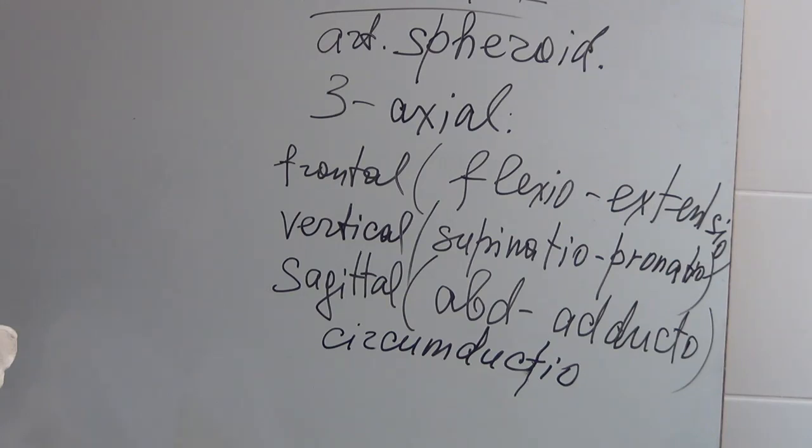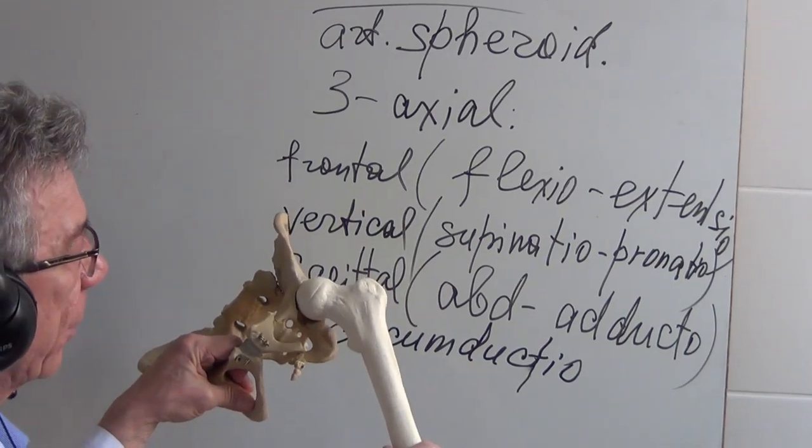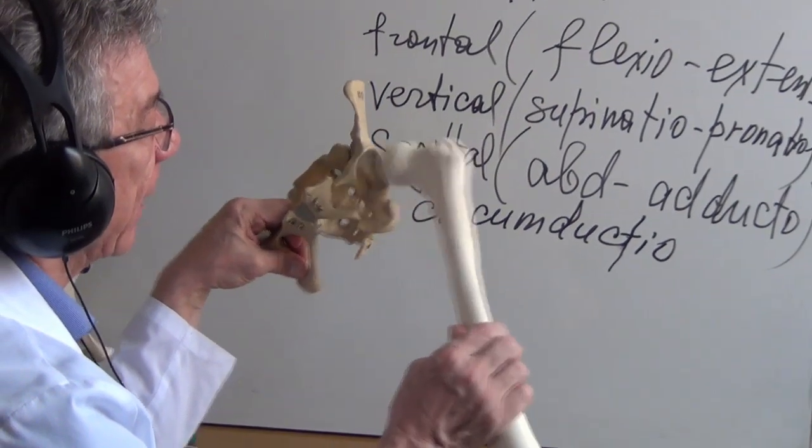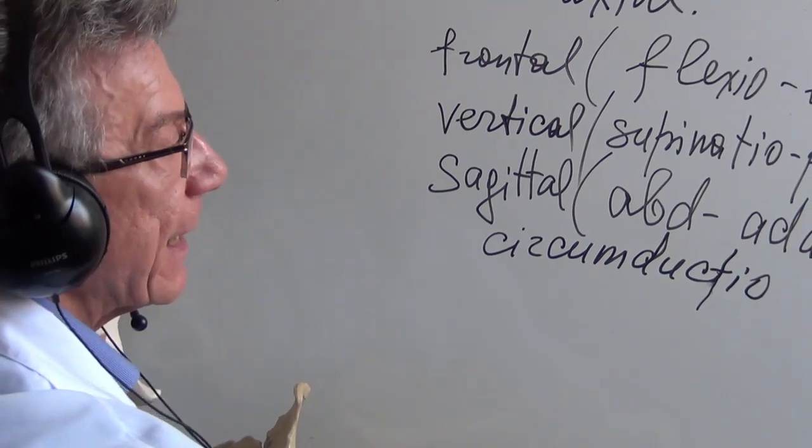The next question, and we already know the geometrical shape of the joint. The next question is what is the type of the joint? How many articulating surfaces do we use? Only two: only caput femoris and fossa acetabuli. So this is articulatio simplex.